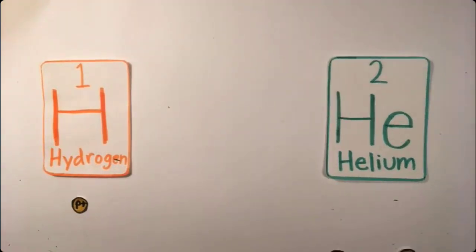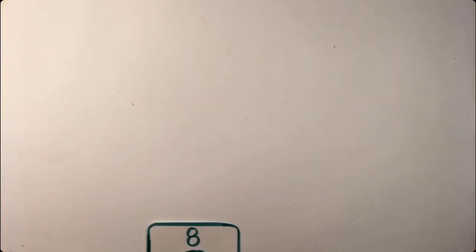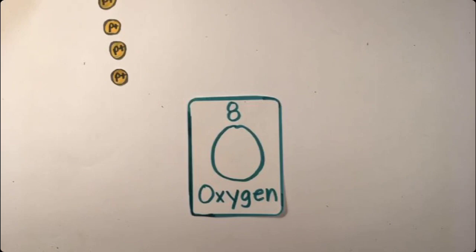One would think that elements with smaller atomic numbers would be more abundant, which is partly true, as hydrogen with one proton is the most abundant, and helium with two protons follows. But then comes the third most abundant, oxygen.